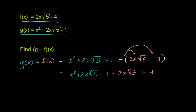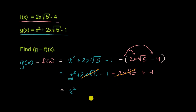Let's see if we can simplify this. We only have one x squared term. Then we have two x times the square root of five and then we subtract two x times the square root of five, so those two cancel out. And then we have minus one plus four, which gives us positive three. So four minus one equals three, and we're done — g minus f of x is equal to x squared plus three.